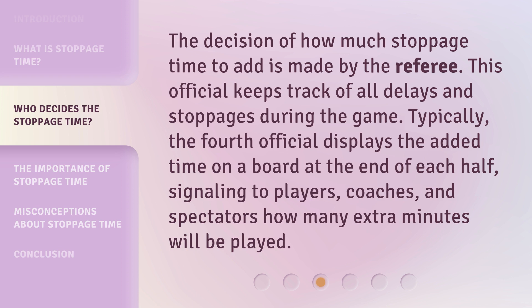The decision of how much stoppage time to add is made by the referee. This official keeps track of all delays and stoppages during the game. Typically, the fourth official displays the added time on a board at the end of each half, signaling to players, coaches, and spectators how many extra minutes will be played.